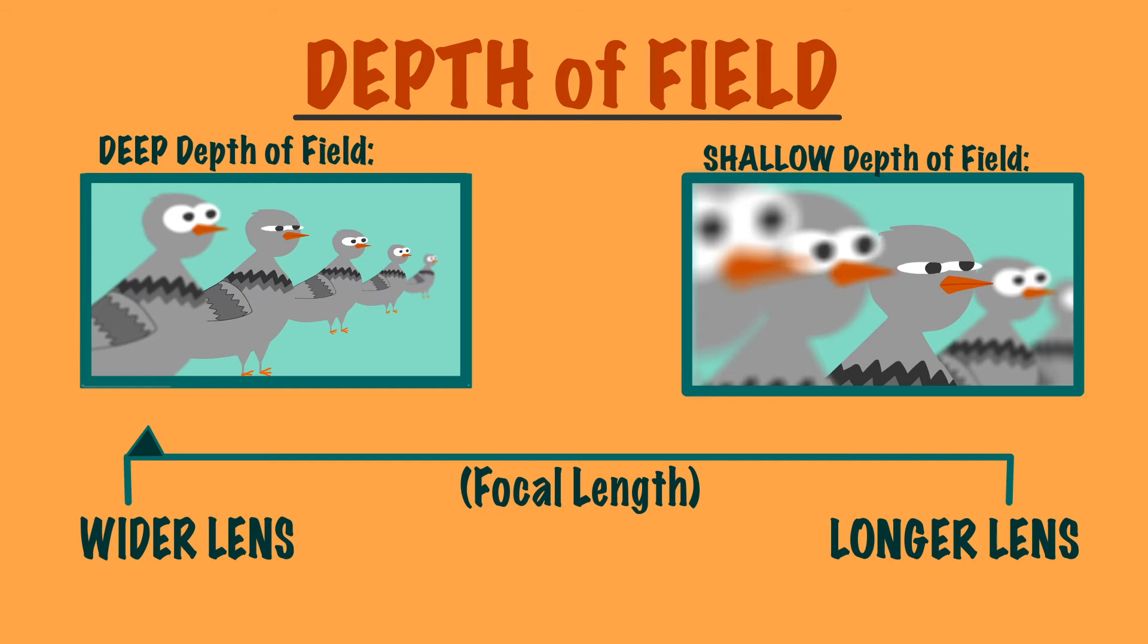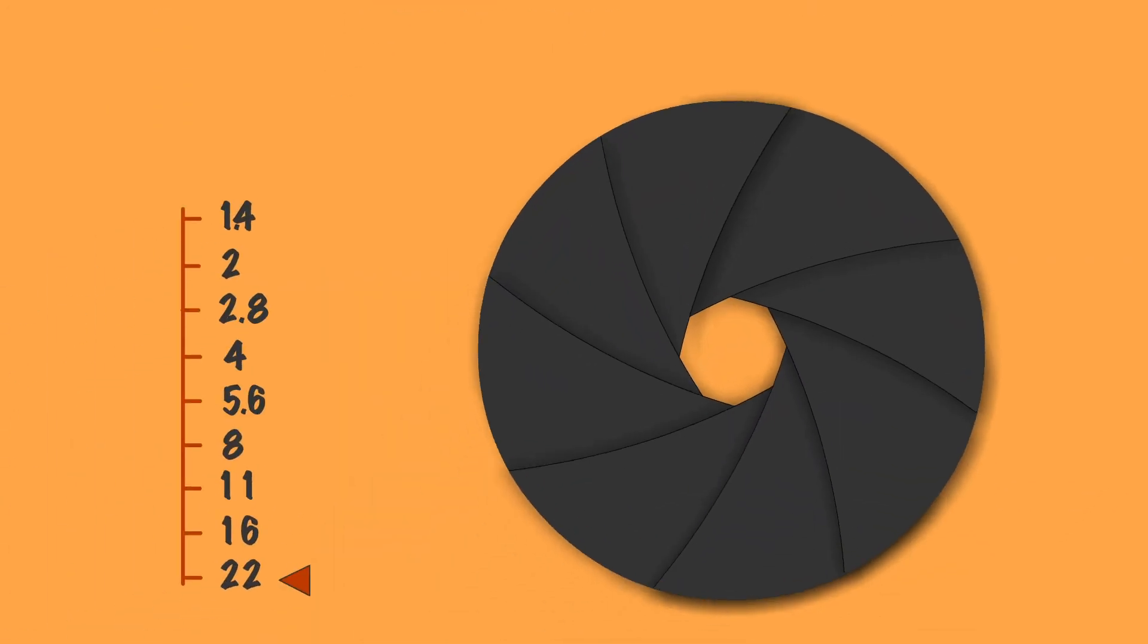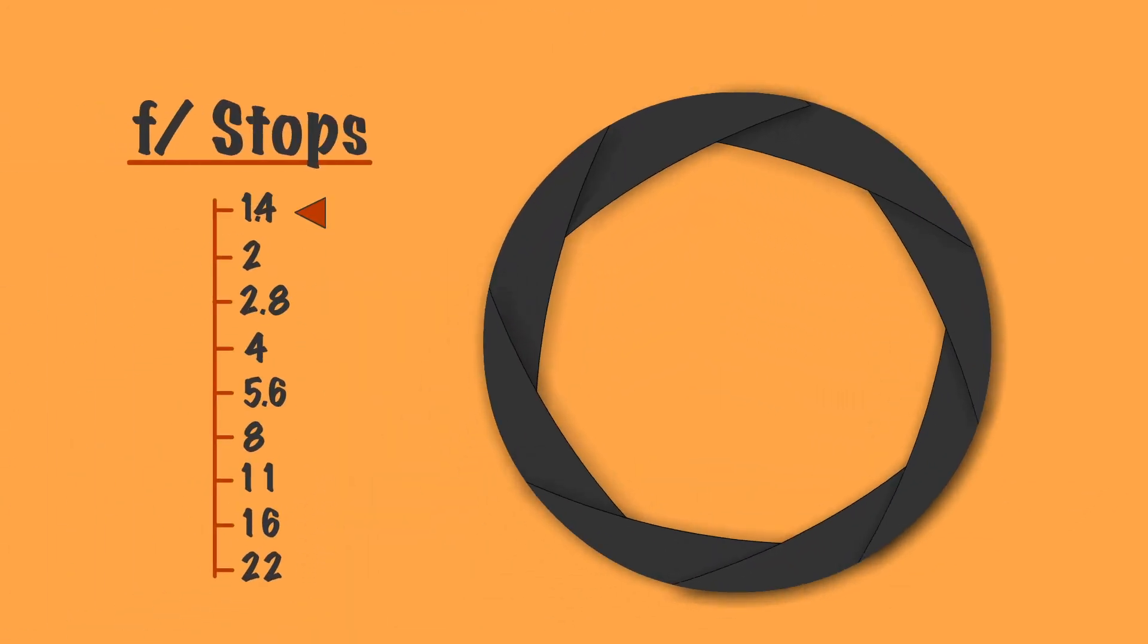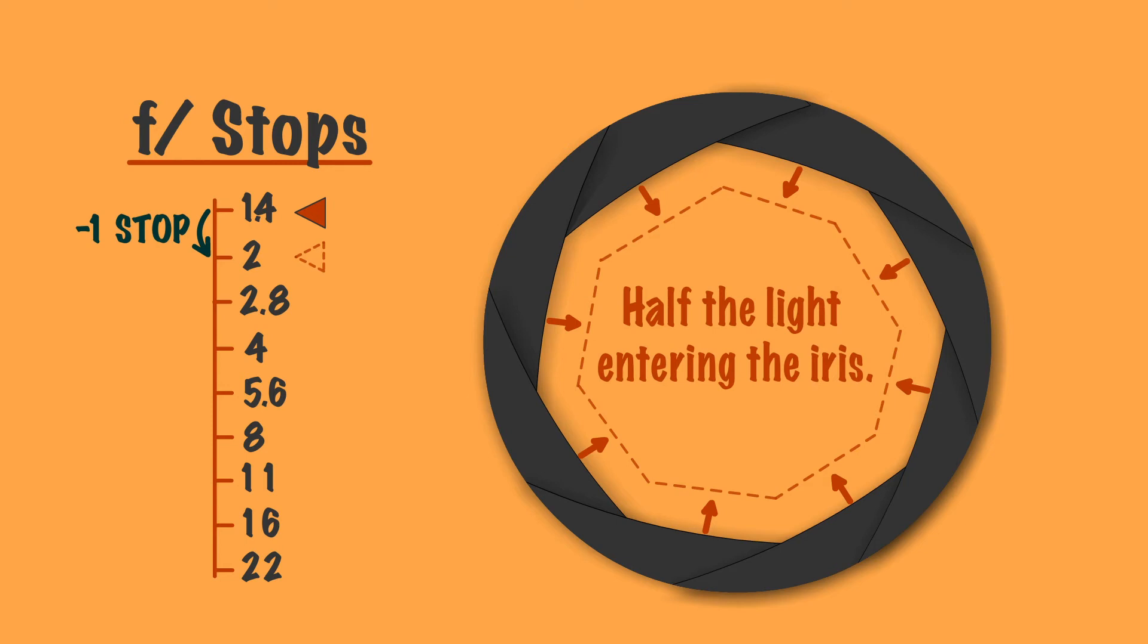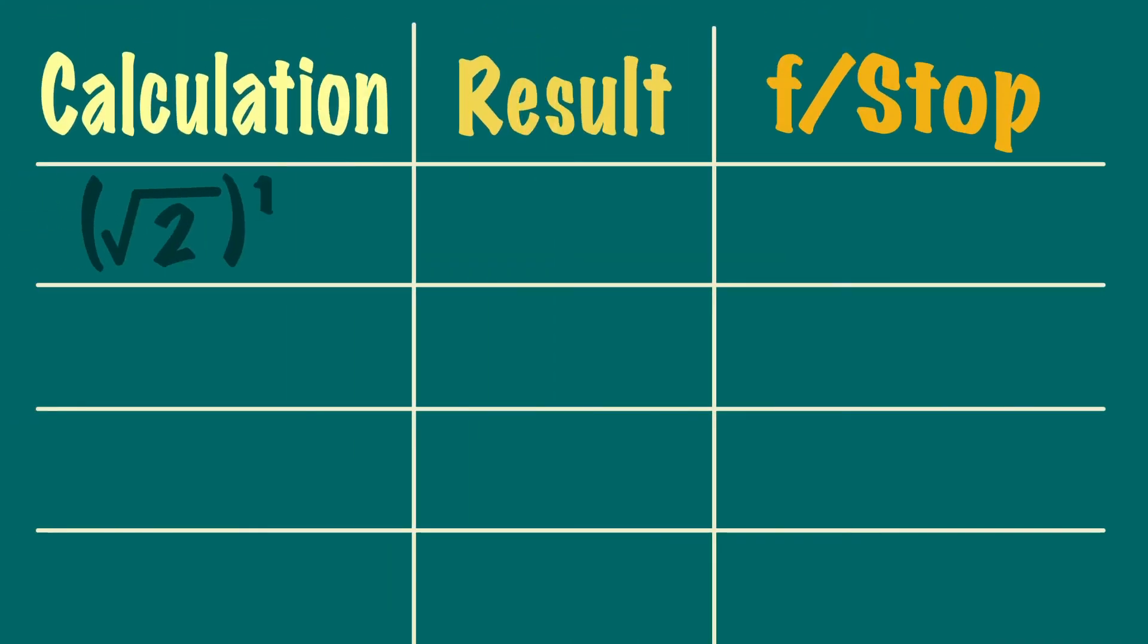On a lens, the iris wheel will be labeled in increments of light stops, but differently to how NDs are measured. These may seem like random numbers, but it's actually just the result of the calculation made in order to half the light entering the iris. This is the square root of 2 to the power of x. x will change every time, but let's start with the square root of 2 to the power of 1.